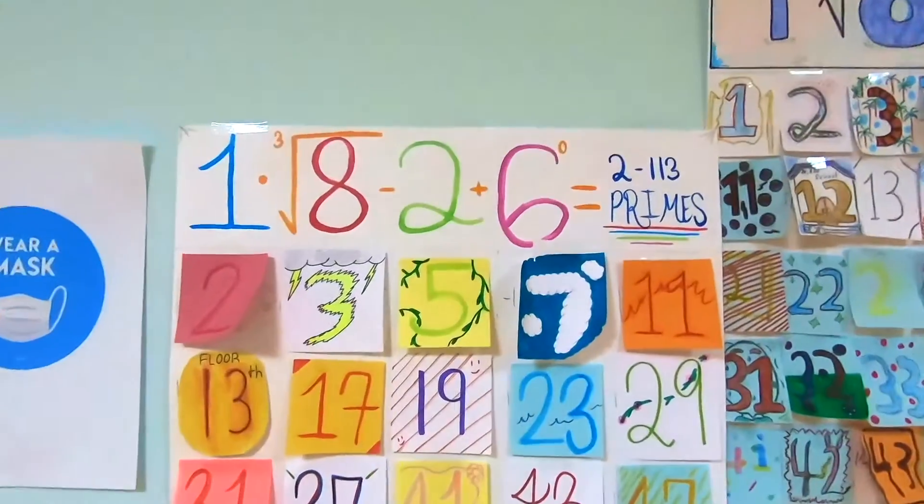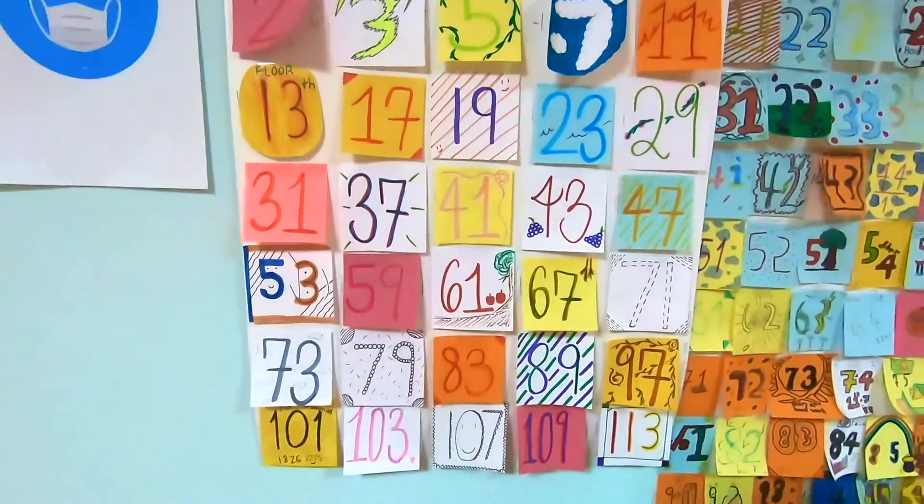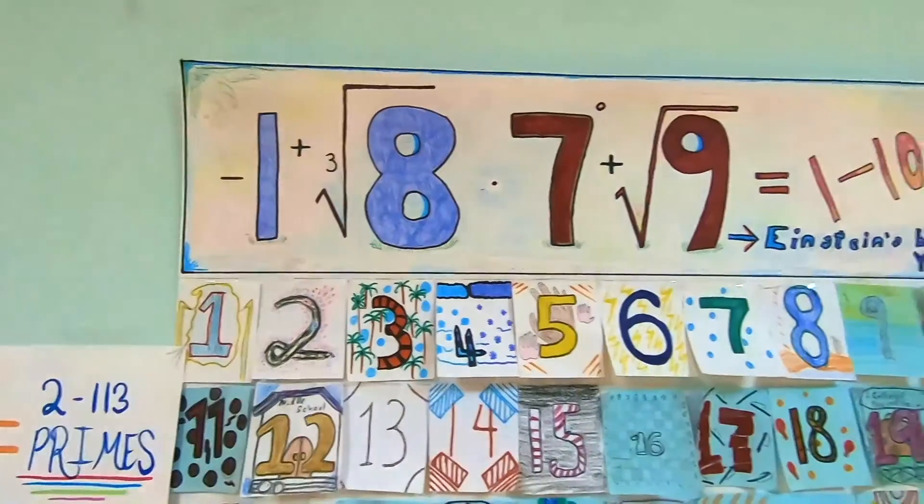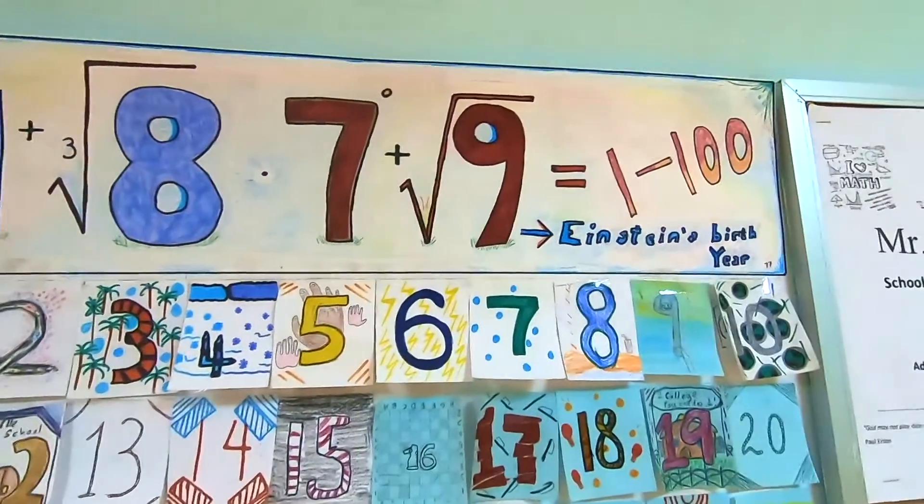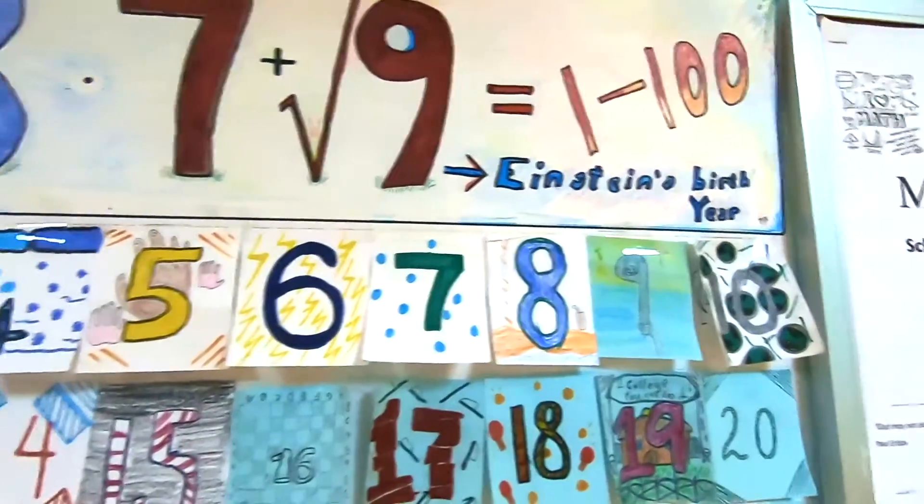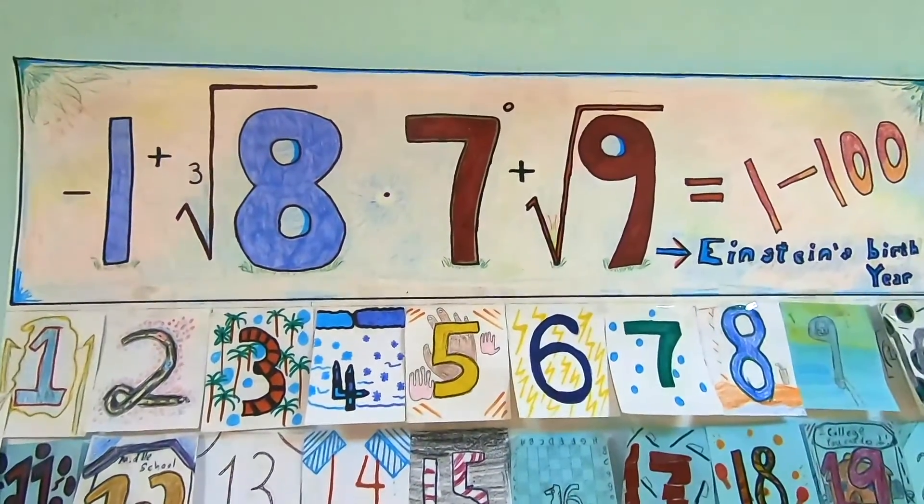Here's another adaptation I did. They're doing this one here. The students need to take a number. For example, this one we're using 1879, the birth year of Einstein. We're going to try to get the numbers 1 to 100 using just the digits 1879.